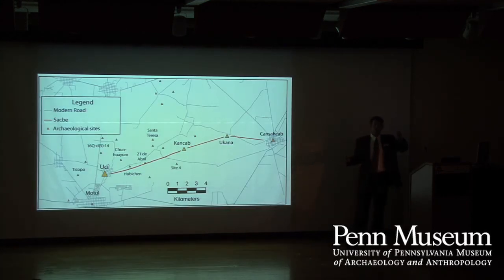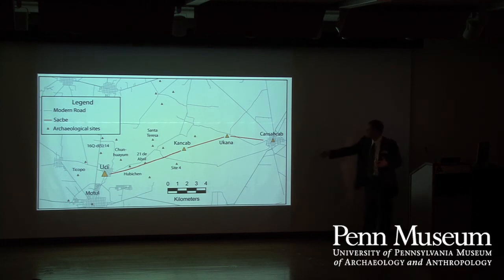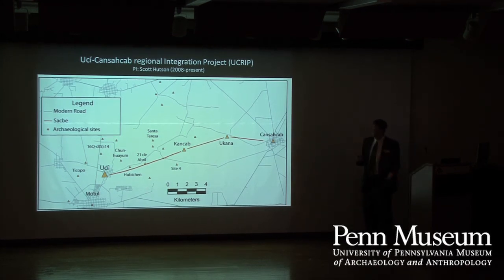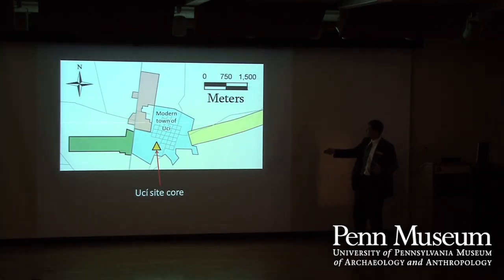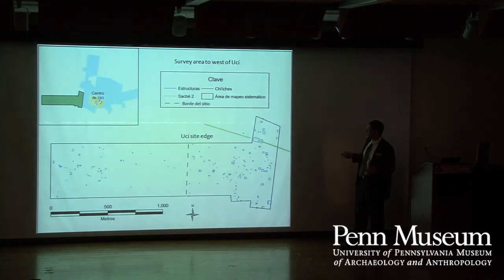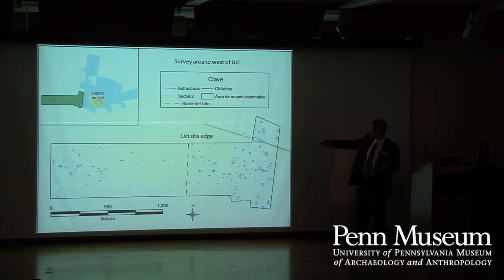There's been some research at the sites at the end of the causeway, but to really understand economic changes and social processes, I thought it would be interesting to see what we find in addition to the stuff on the ends. So I started this project in 2008 — the Eki Constant Island Regional Integration Project. We began by mapping the site center of Eki, and did these same fishbone transects to establish the boundaries.